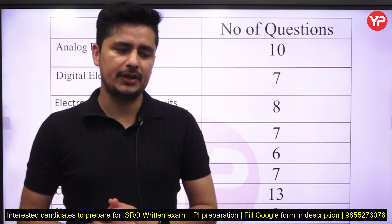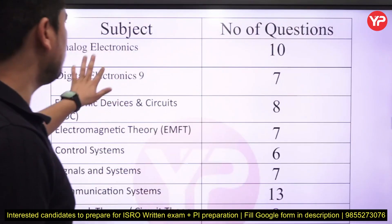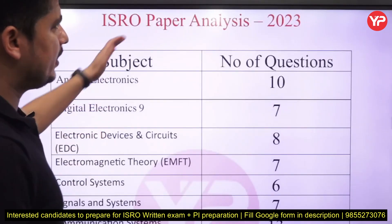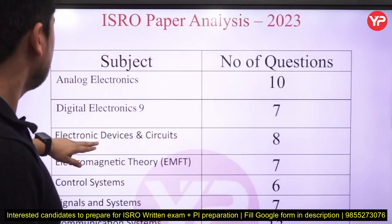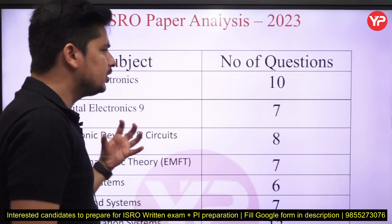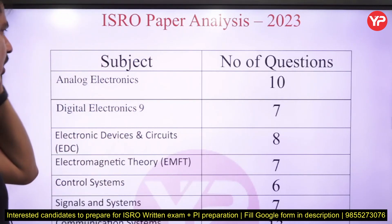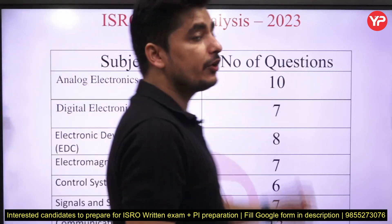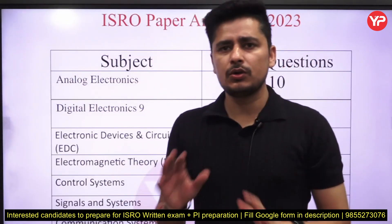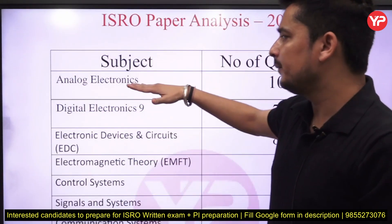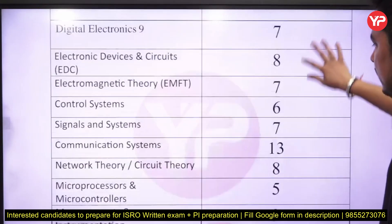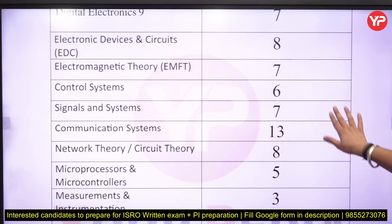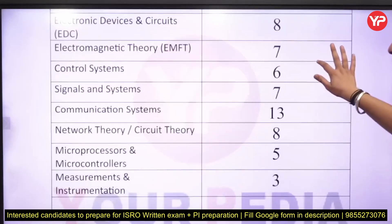Welcome to your video education. Today we are going to analyze the ISRO paper from 2023. Coming to the crux of it — from each subject, how many questions are asked? From analog electronics, the huge number is 10 questions. You can analyze here that each subject has a different weightage, and most questions are coming from analog electronics and communication.